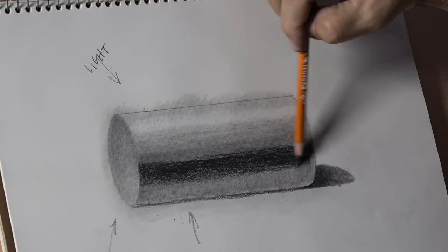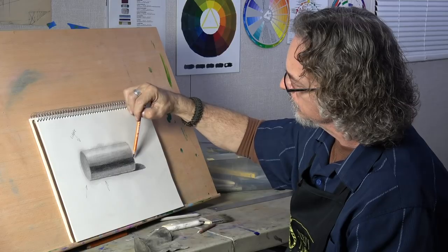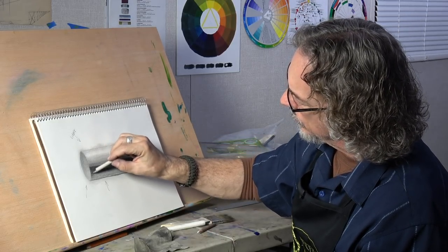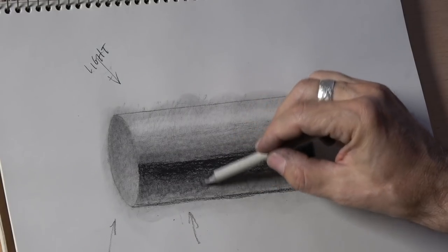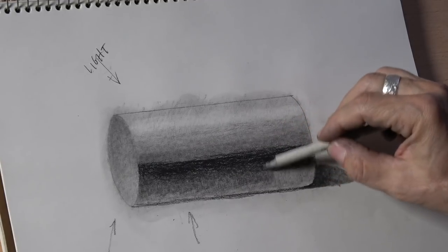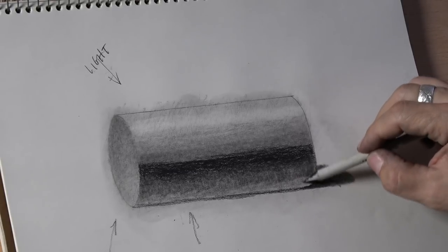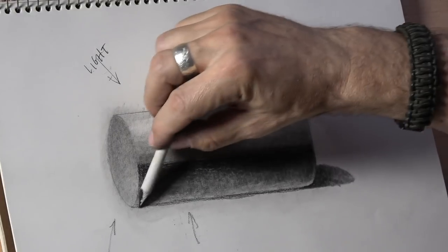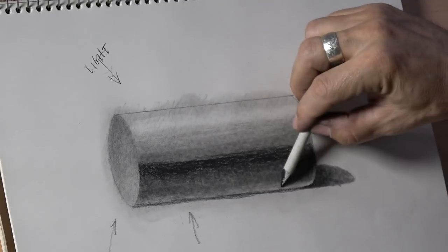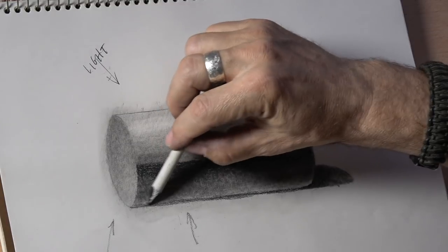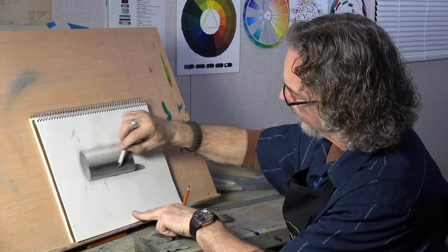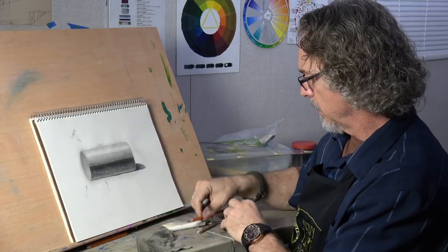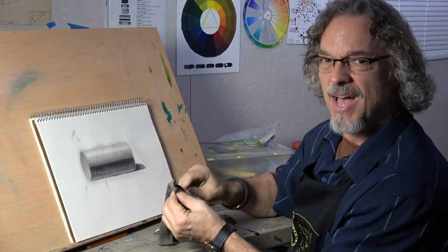So now we got a nice rich core shadow, nice dark core shadow happening here. Come back in with my blender, and now I can go in between the core shadow and my ambient light, and just give it a nice soft feel. Because here again all of this has to turn, so there really isn't any edges from transition to transition of values. They're all turning edges. And you can also clean your blending tools up by just rubbing on a paper towel or a chamois, and that'll take off a lot of the excess charcoal.